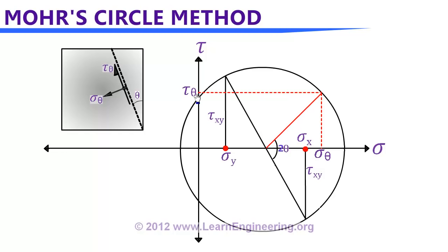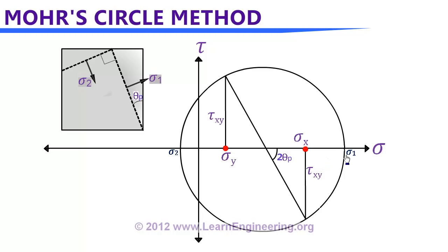The maximum normal stress can be noted directly from the Mohr circle — this is the principal stress sigma_1, and the corresponding plane is the principal plane. The angle of the principal plane in the actual body is half the angle read from the Mohr circle. Normal stress is minimum at the opposite end of the circle — this is the minimum principal plane. The angle between the maximum and minimum principal planes is 180 degrees in the Mohr circle, which means 90 degrees in the actual body.